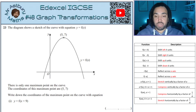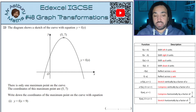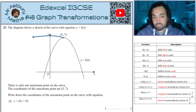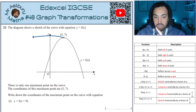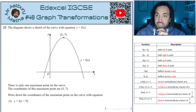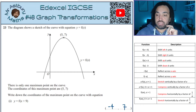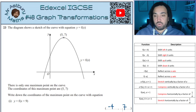We have a maximum point and it says: what are the coordinates of the new maximum point? Well, f(x+9) means it shifts 9 to the left, which means that the x coordinate has changed by negative 9. So the new x coordinate will be minus 4, and the y coordinate will stay the same because it does not affect the y coordinate.